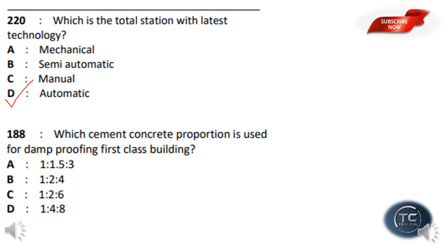Which cement concrete proportion is used for damp-proofing a first-class building? The options are: 1:1.5:3, 1:2:4, 1:2:6, 1:4:8. Option A — 1:1.5:3 — is the correct answer.